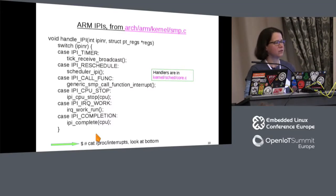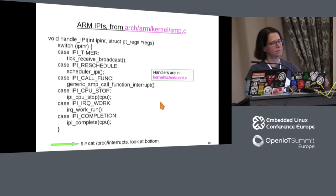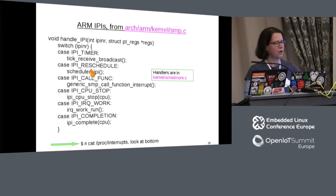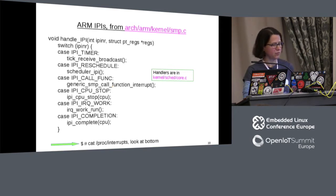Here's a switch-case statement from kernel/sched/core.c showing what functions the different IPIs correspond to. Most of these have to do with SMP — CPU hotplug, stopping work, or transferring work between cores when the system is coming up or going down. One particularly interesting one seen a lot in studies is the call function interrupt, which is part of receive packet steering — it allows Ethernet packet processing to be moved from one core to another.